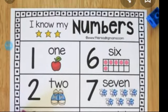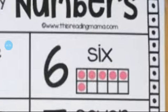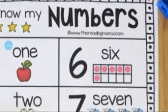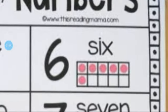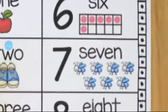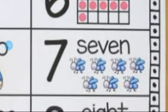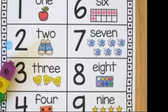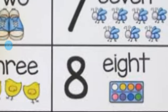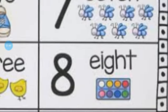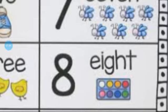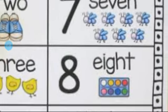After 5, which number comes? Number 6. Which number is this? Number 6. After 6, which number comes? Number 7. Which number is this? This is number 7. After 7, which number comes? Number 8. Which number is this? This is number 8.